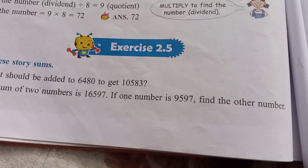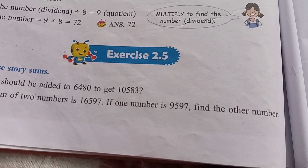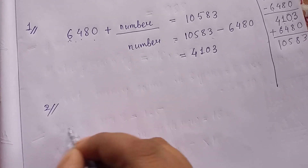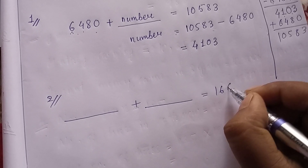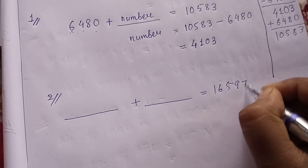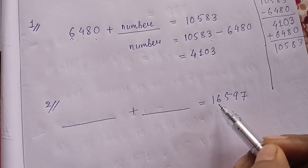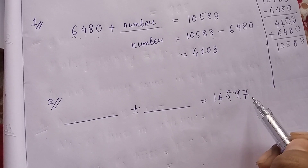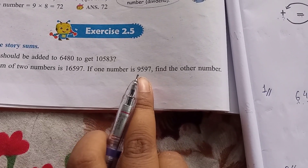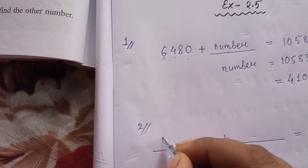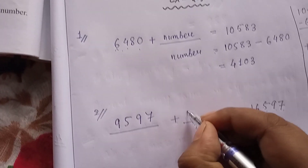Now look at Question 2: The sum of two numbers is 16,597. When we add the two numbers we get 16,597. One of the numbers is given as 9,597. We need to find the other number.